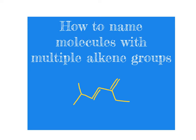I'm going to introduce a little general terminology to get started. If we have more than one alkene group — specifically two alkene groups — we're going to refer to the molecule as a diene. We can dissect that word: 'ene' means alkene, 'di' means two. So a diene is a molecule with two carbon-carbon double bonds, two alkene groups.